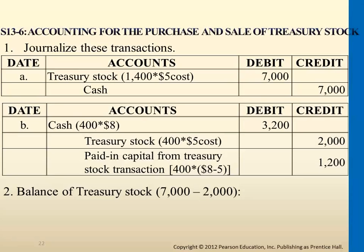We have a second entry here. If we resell a portion — 400 shares back to the market at $8 — we will compare $8 against the $5 originally paid to purchase. So we have a $3 difference times 400 shares, which gives us paid-in capital from treasury stock transactions on the credit side as the premium. We originally purchased each share at $5 and now resell it at $8. $3 times 400 shares gives you $1,200 as the premium to this account.